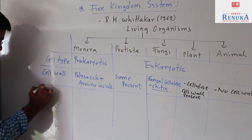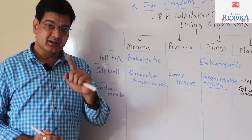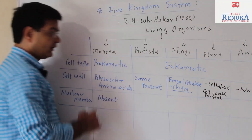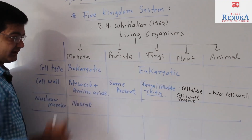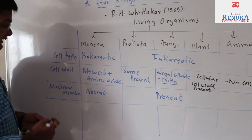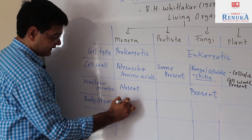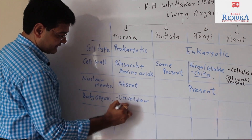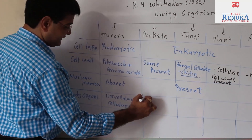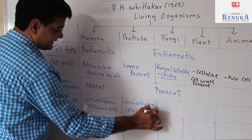The third criteria is the nuclear membrane. In the case of Monera, nuclear membrane is absent. But all other organisms — Protista, Fungi, Plants, and Animals — as they are eukaryotic, nuclear membrane is always present. The next criteria is body organization. Monera organisms are unicellular, so a cellular kind of organization is found. In the case of Protista, again all unicellular organisms are included, so cellular organization is found.